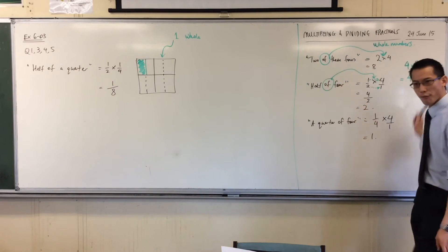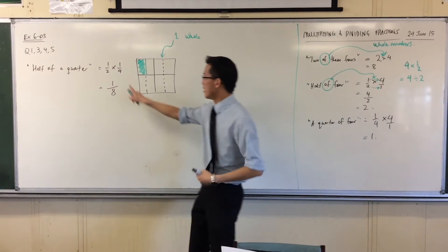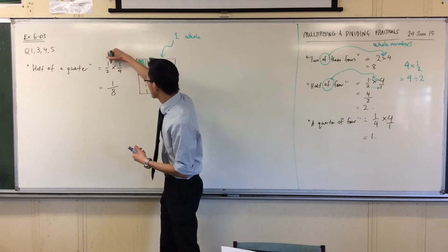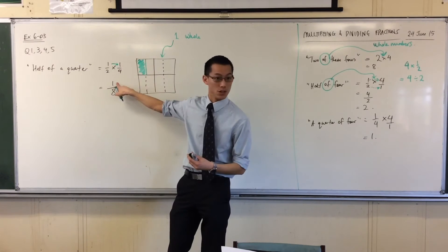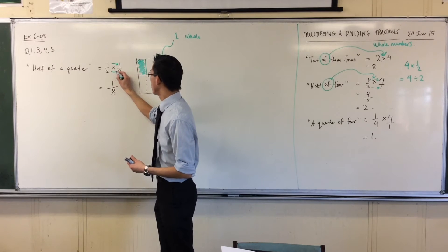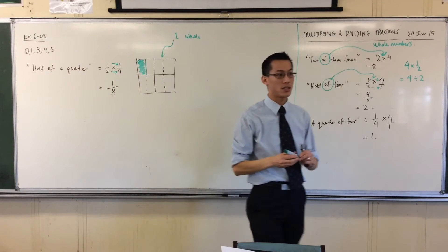And you can see just like before, from here to here, right? It's one times one. That gives you a numerator. And then it's two times four. That gives you the denominator.